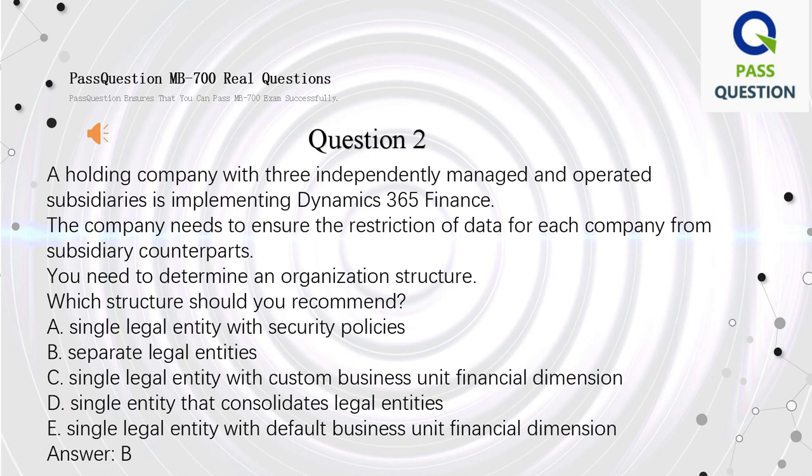A: Single legal entity with security policies. B: Separate legal entities. C: Single legal entity with custom business unit financial dimension. D: Single entity that consolidates legal entities. E: Single legal entity with default business unit financial dimension. Answer: B.